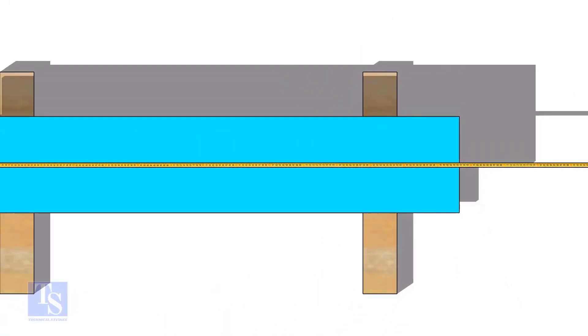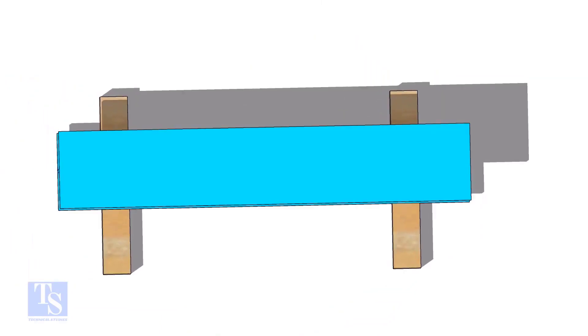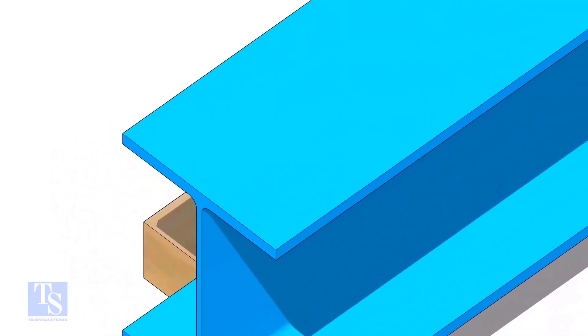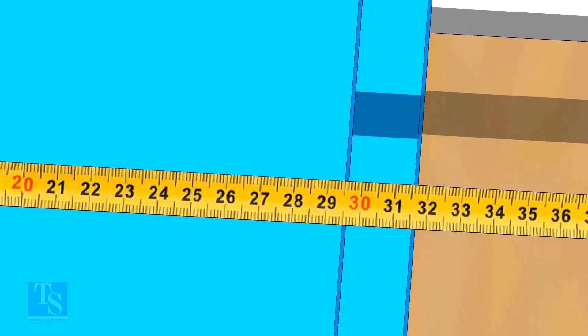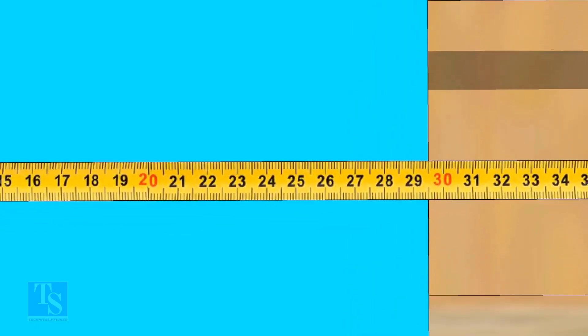Let us check the width of the beam. How much is this? The width is 5 millimeters less than 300, is equal to 295 millimeters.